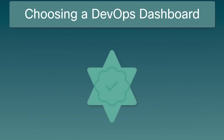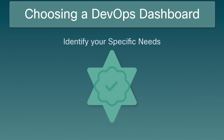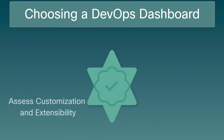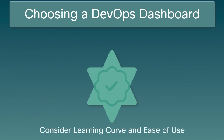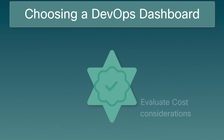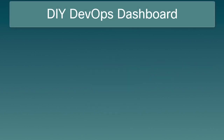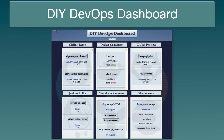Here are some key considerations for choosing a suitable DevOps dashboard: identify your specific needs, evaluate scalability and flexibility, assess customization and extensibility, consider learning curve and ease of use, evaluate cost considerations, and consider community support and ecosystem.